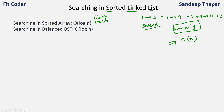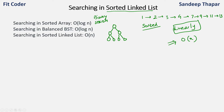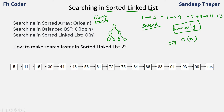Similarly, searching in a balanced binary search tree is also O(log n) because we can compare the node with the root and then discard either the left subtree or the right subtree at every step. But in case of a linked list the search is O(n) because we need to do linear search. So to make this search process faster in a sorted linked list, the concept of skip list comes.